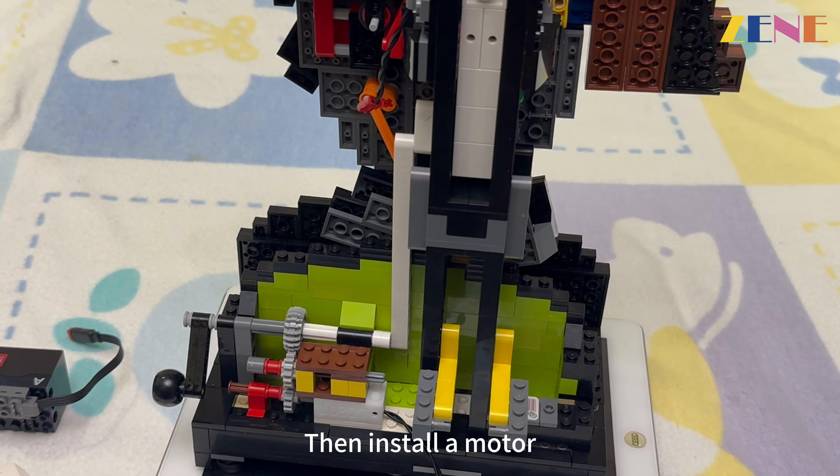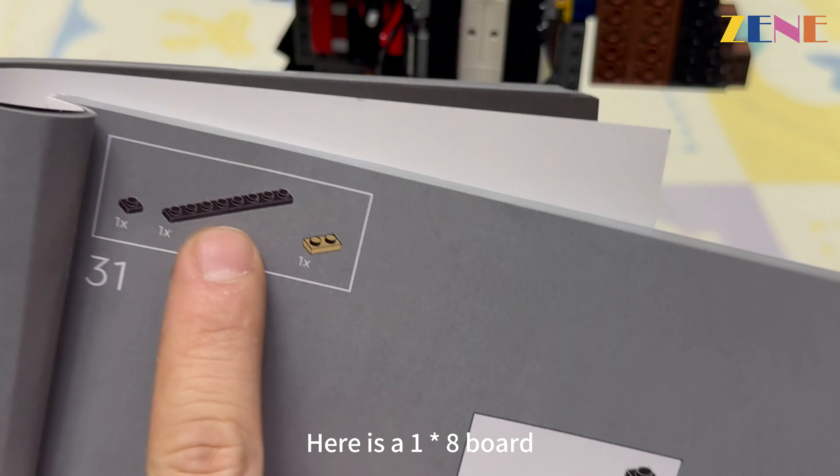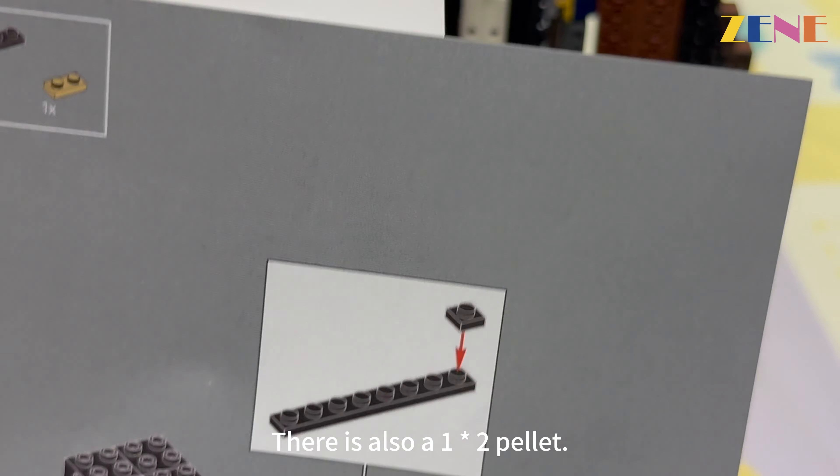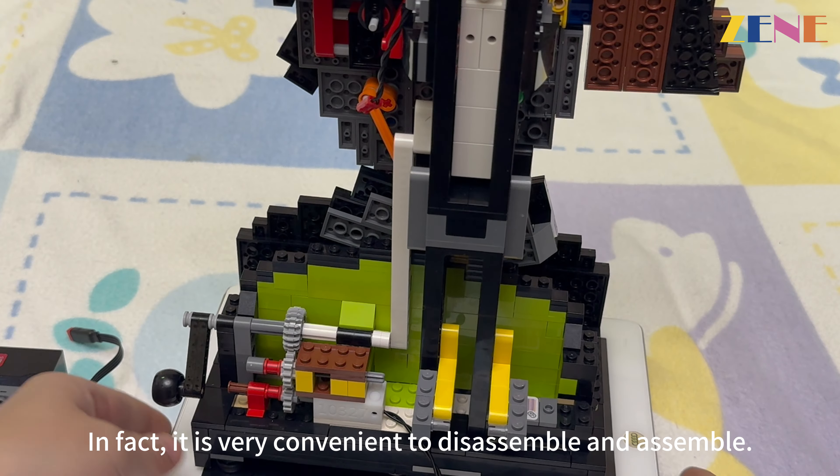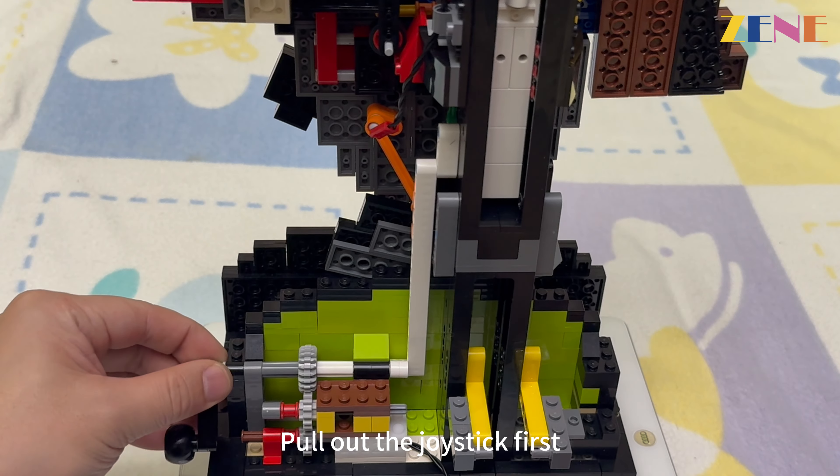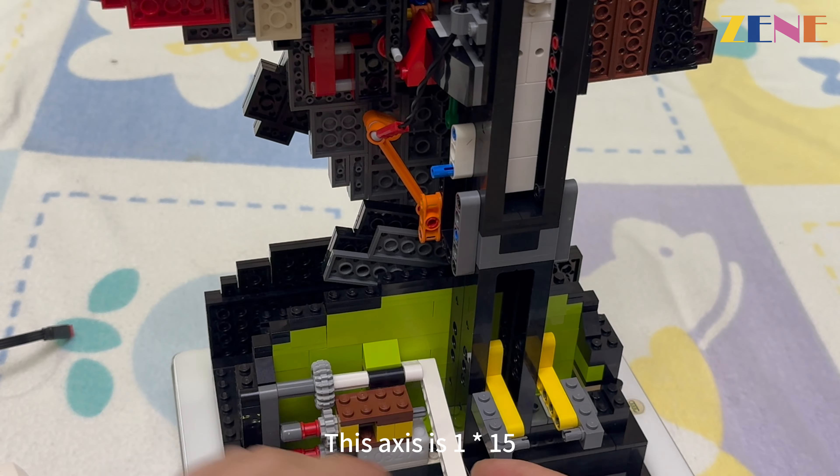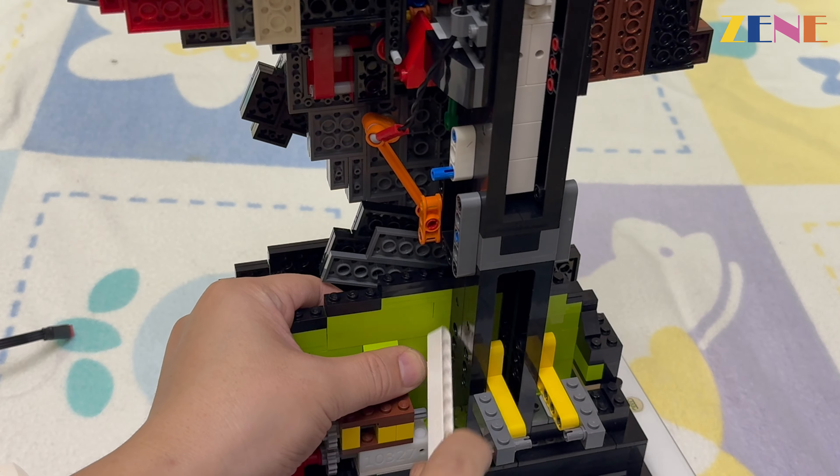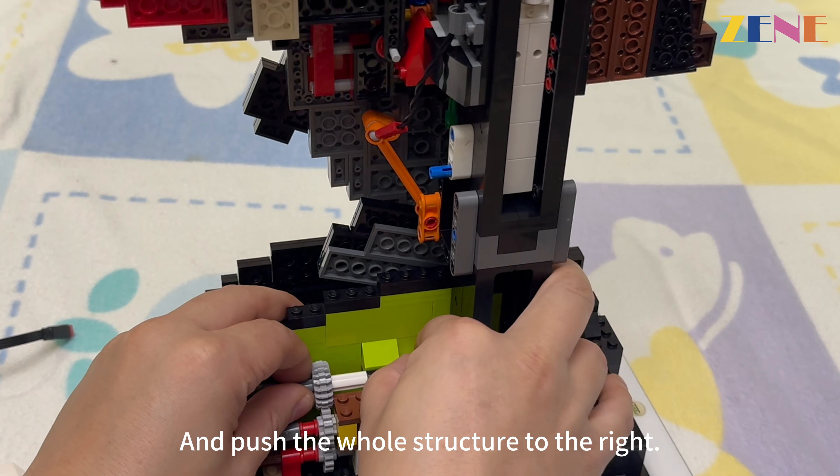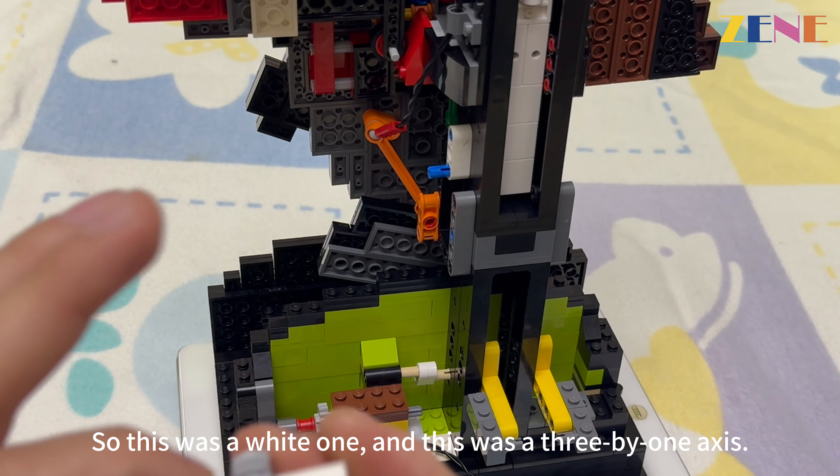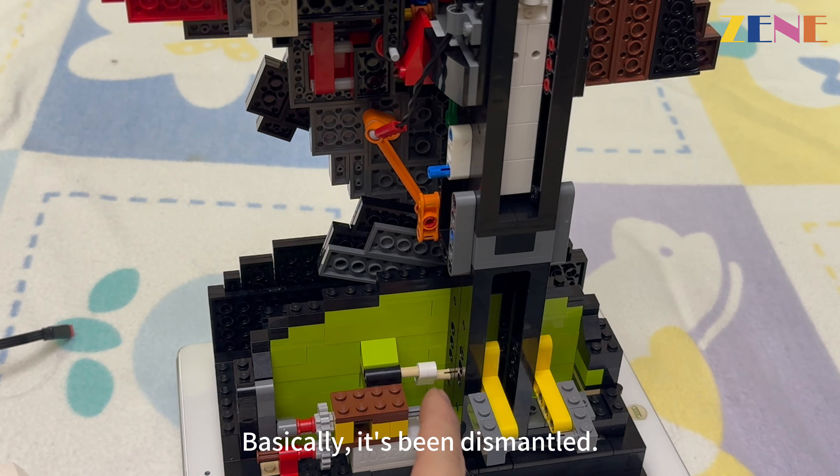In our step 31, here is a 1x8 board and also a 1-2 pellet. How to get it? In fact, it is very convenient to disassemble and assemble. Then release this axis, which is 1x15. He can take it down and push the whole structure to the right. So this was a white one, and this was a 3x1 axis. Basically, it's been dismantled.